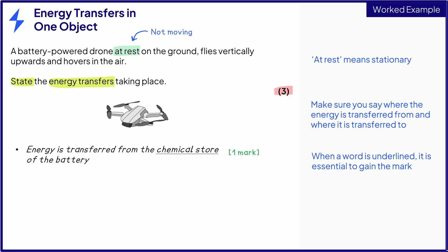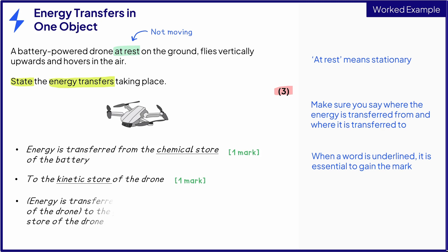So where is that energy being transferred to? The drone starts moving, so that's the kinetic store — that's the second mark. The drone flies vertically upwards, so it's gaining height. Therefore, energy is transferred to its gravitational potential store — and that's the third mark.